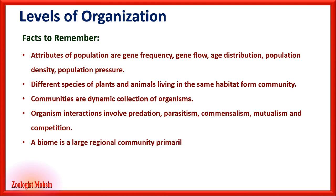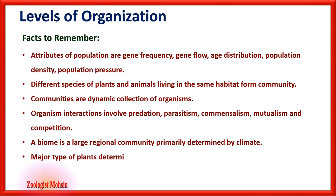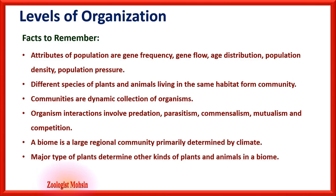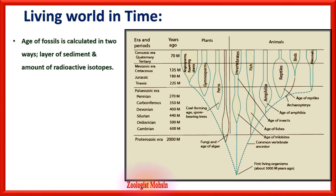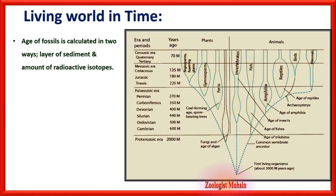A biome is a large regional community primarily determined by climate. Major types of plants determine other kinds of plants and animals in a biome. The age of fossils is calculated in two ways: by the layer of sediments of the earth, and by the amount of radioactive isotopes present in that particular layer or depth of the earth.